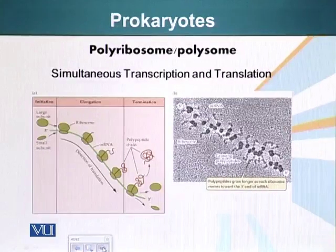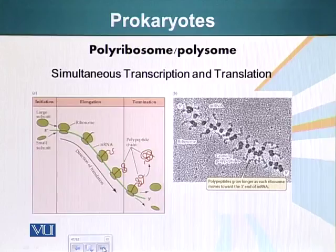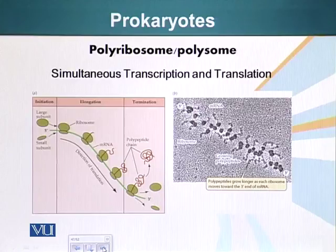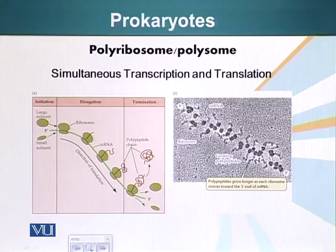Before we talk about how proteins are targeted, let me tell you a little bit about prokaryotes — what happens to them after the proteins are made. As we know, there are no membrane-bound organelles. Transcription and translation are happening out there in the cytoplasm, and in the cytoplasm we also have the ribosomes. So in prokaryotes, like bacterial cells, as the RNA is elongating, the ribosomes start to assemble on them while the messenger RNA is being made, and the protein starts to be formed even though the entire messenger RNA has not been transcribed yet.